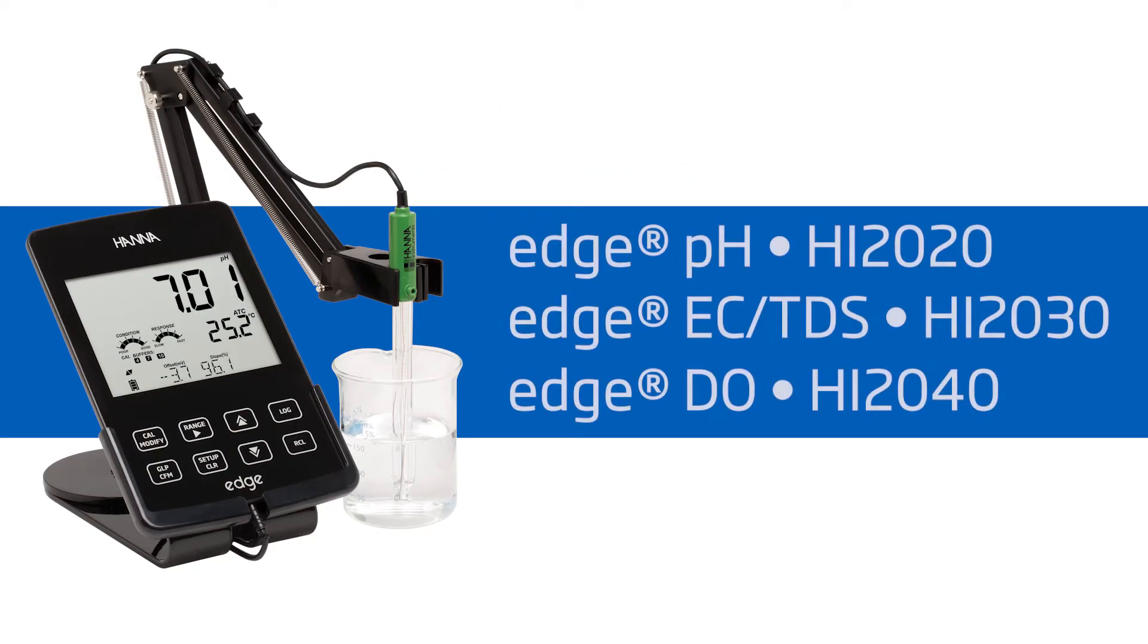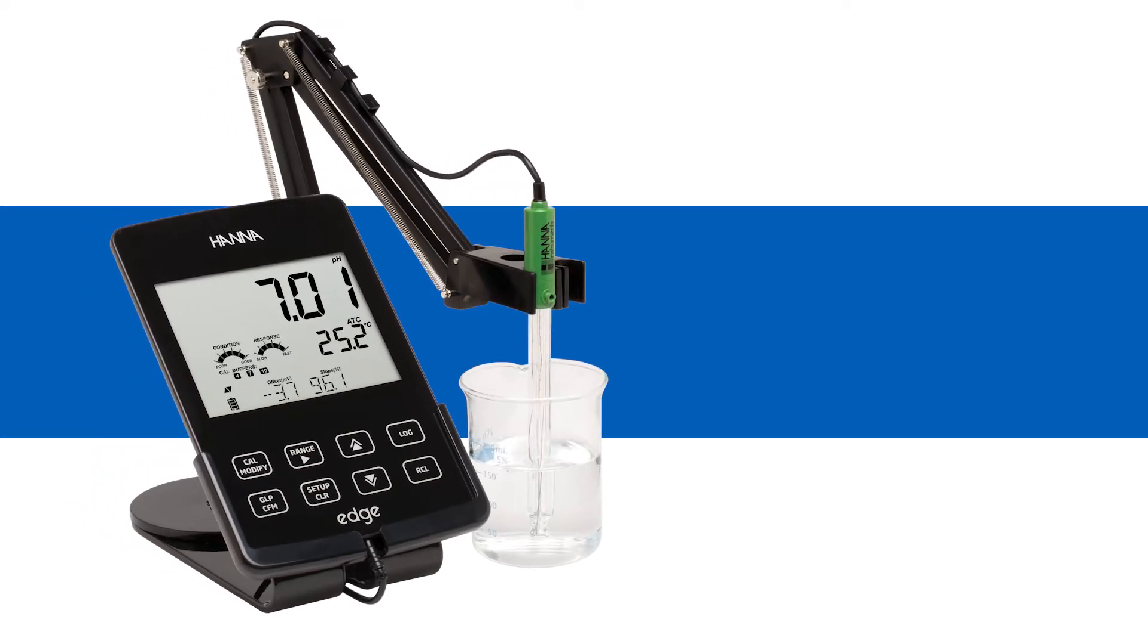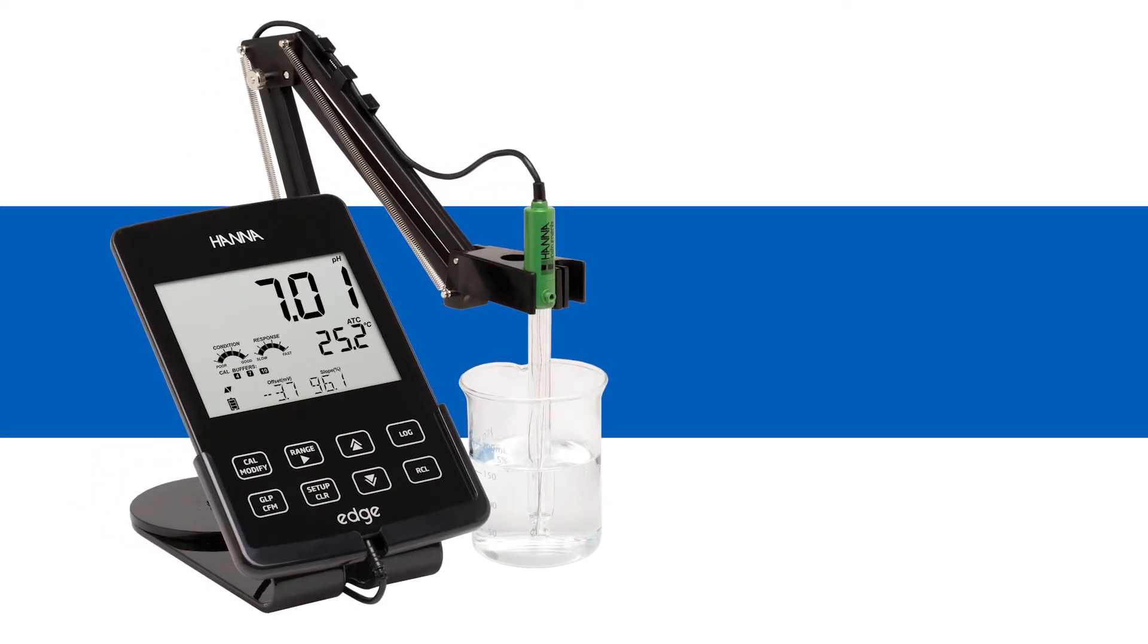Perfect for lab use, this advanced meter measures three different parameters: pH, EC/TDS, and DO, simply by changing the sensor. In this video, we'll go through the calibration process for each parameter.